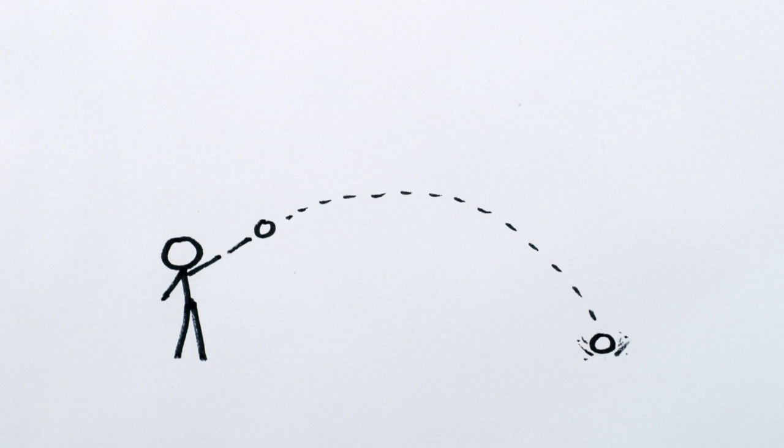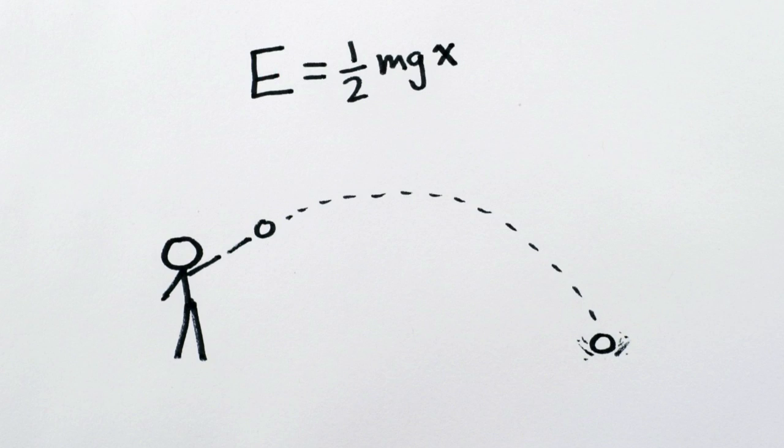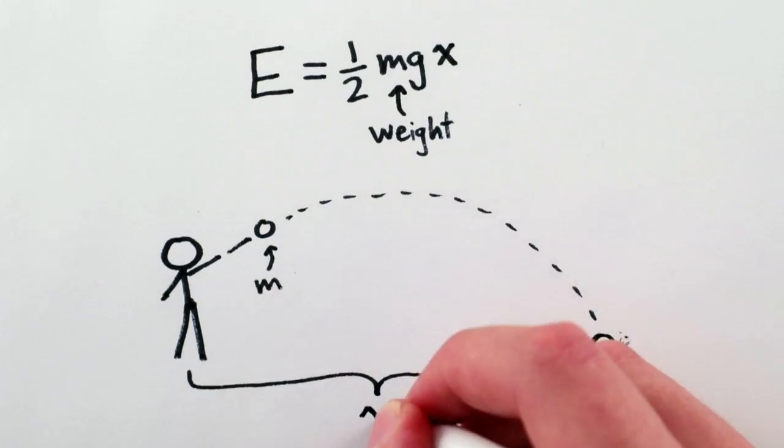Ignoring trivial things like air resistance and lift, we can figure out roughly how much energy each implement has just by knowing its weight and how far it gets thrown.